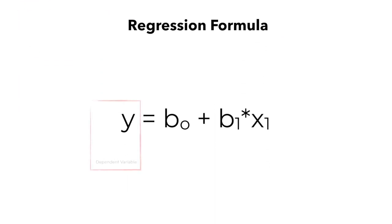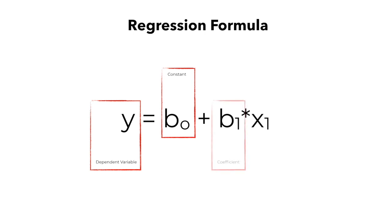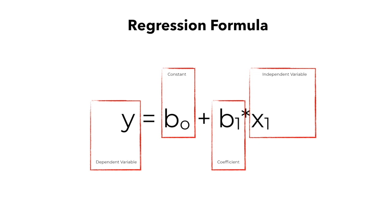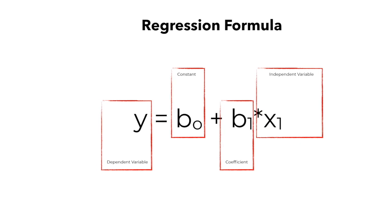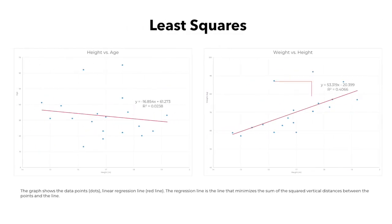The regression formula has both the dependent and independent variables in a mathematical equation, plus a constant intercept as well as a coefficient. The dependent variable is related to the independent variable with additional considerations: a constant intercept, or where the line starts from, and the slope of the regression line, which is also known as the coefficient. To get these variables from our data, we can use the least squares approach, which helps measure the distance from each dot to a line, finding the line that best fits the results.